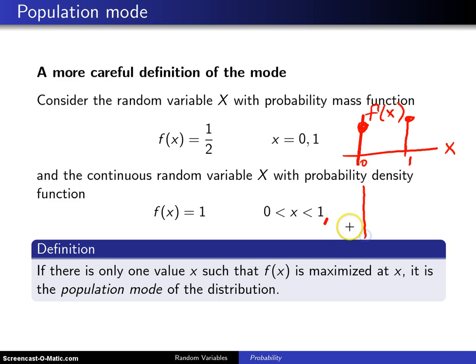So this one is continuous, unlike the first, and it is at height one. So is there a population mode here?